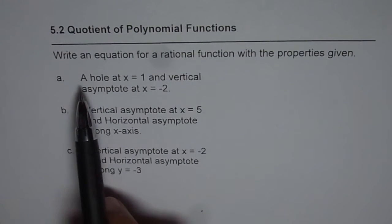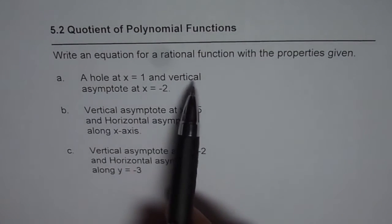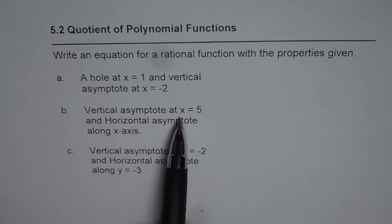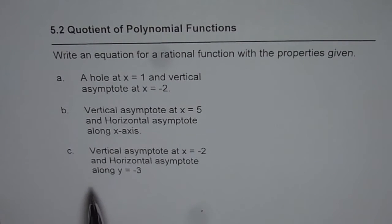The first one, a hole at x equals 1 and vertical asymptote at x equals minus 2. B is vertical asymptote at x equals 5 and horizontal asymptote along x axis. And C is vertical asymptote at x equals minus 2 and horizontal asymptote along y equals minus 3.